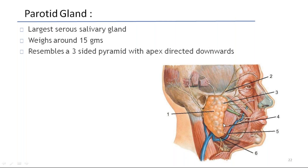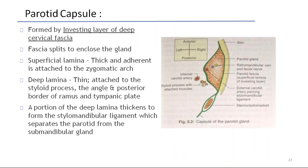Coming to anatomy. This is the parotid gland — the largest serous salivary gland. It weighs around 15 grams and resembles a three-sided pyramid with the apex directed downwards. Coming to the parotid capsule: it is formed by the investing layer of deep fascia, which splits to enclose the gland.